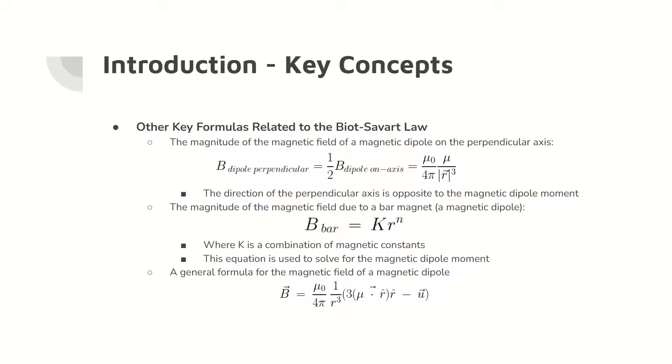The magnetic field for a magnetic dipole on the perpendicular axis is one-half of the on-axis magnetic field. The magnetic field of a bar magnet is also equivalent to the product of k and the distance r to the n power, where k is a combination of magnetic constants.